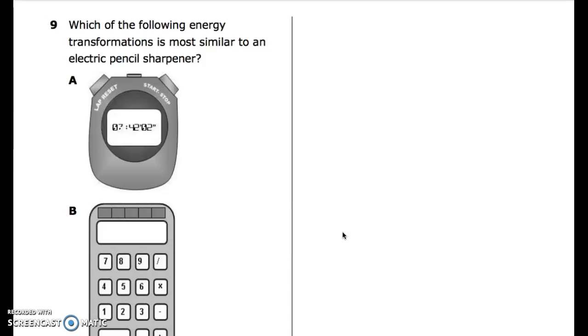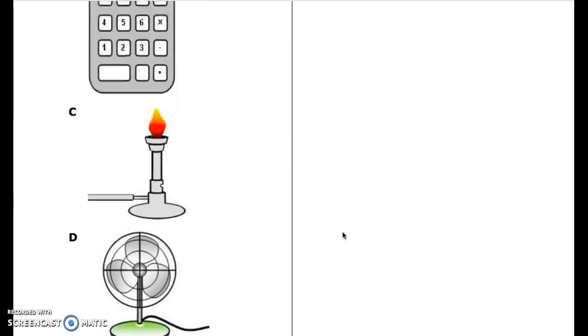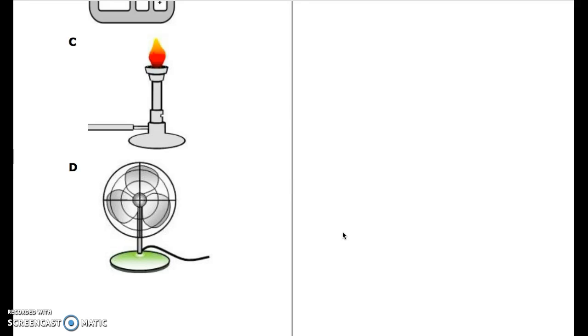Number 9: Which of the following energy transformations is most similar to an electric pencil sharpener? A. Stopwatch. B. Calculator. C. A Bunsen burner. And D. An electric fan.